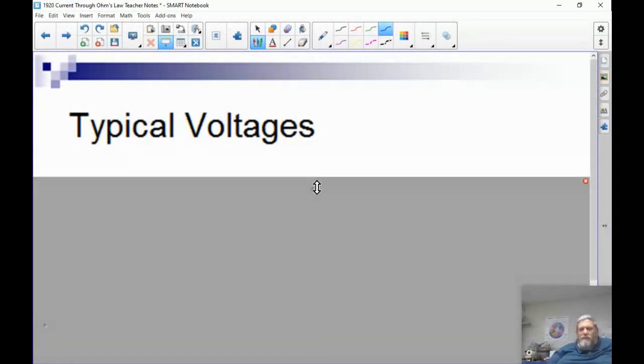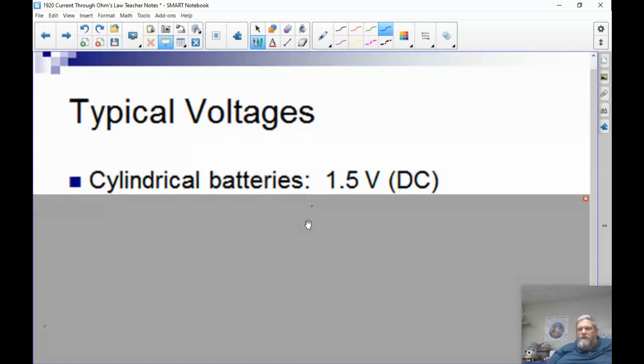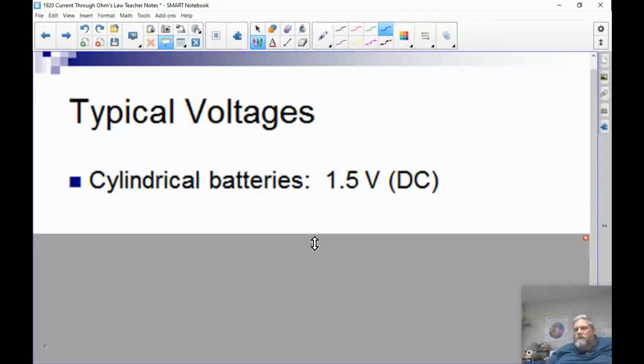When we talk about batteries, most type of batteries that you're familiar with are those cylinder batteries: AA, AAA, C batteries, D batteries. They're all 1.5 volts. The difference is that a D battery is bigger, so it contains more chemicals, so it lasts longer.